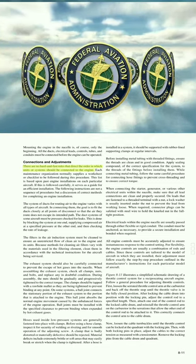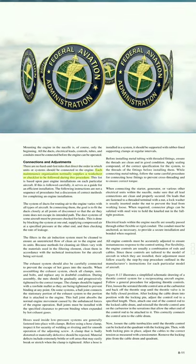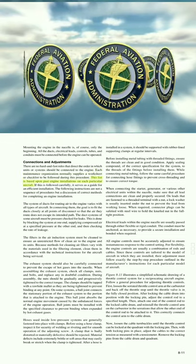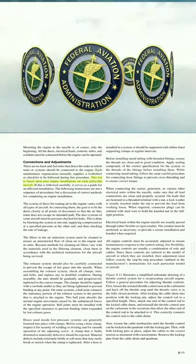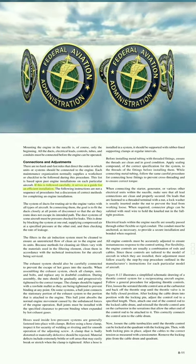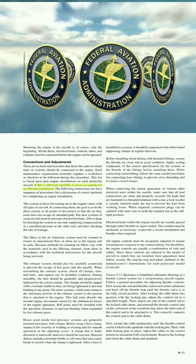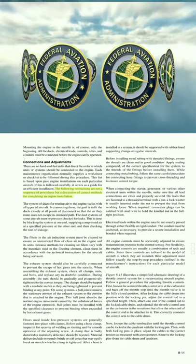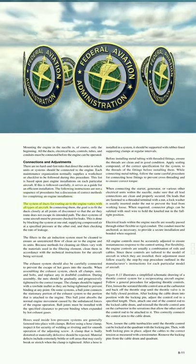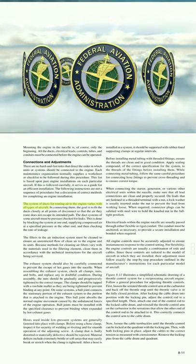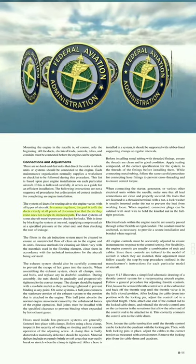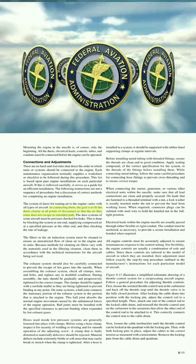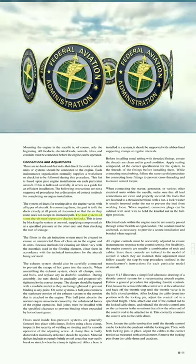Connections and Adjustments: There are no hard and fast rules that direct the order in which units or systems should be connected to the engine. Each maintenance organization normally supplies a worksheet or checklist to be followed during this procedure. The following instructions are not a sequence of procedures but a discussion of correct methods for completing an engine installation. In connecting air ducts, the goal is to fit the ducts closely at all points of disconnect so that the air they route does not escape its intended path. The duct systems of some aircraft must be pressure-checked for leaks.